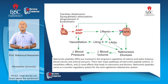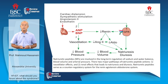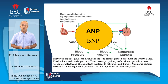Regarding natriuretic peptides: these are released whenever there is increased cardiac stress. Natriuretic peptides lead to vasodilation, lowering blood pressure, and increased natriuresis and diuresis. Their effects are counter-regulatory to the effects of renin-angiotensin system activation. We have two peptide hormones: atrial natriuretic peptide and brain natriuretic peptide.